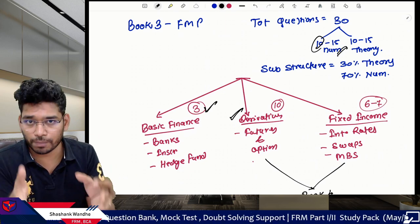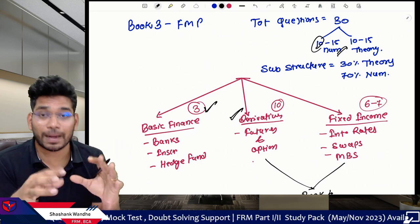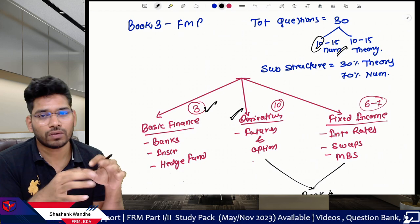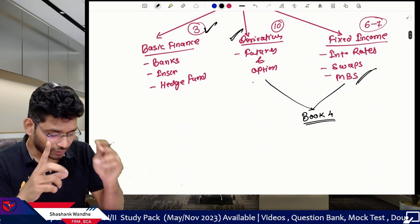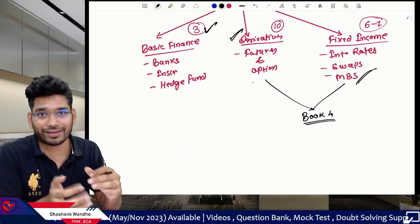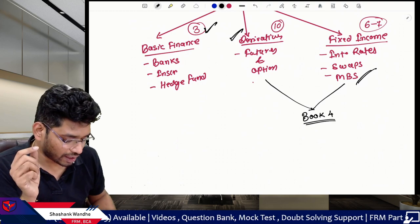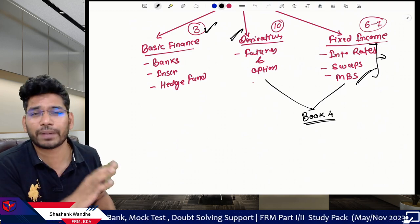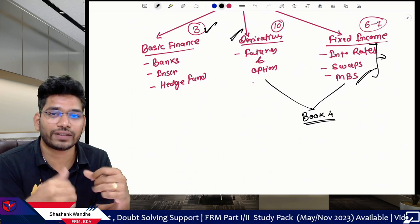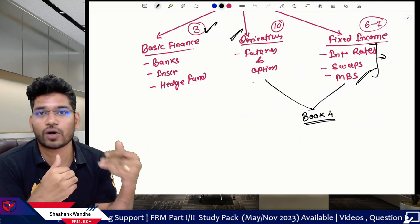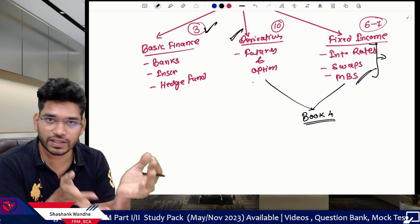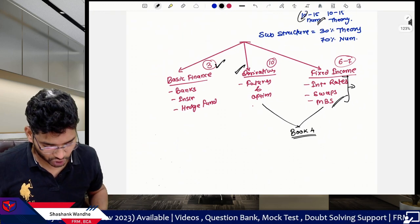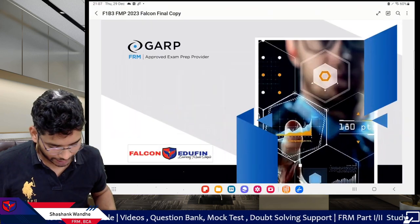Then move to the fixed income section. It's not compulsory to do derivatives first — you can start with fixed income in Book 3, then cover the six fixed income topics in Book 4, and then do derivatives. A fine-tuned self-study sequence will be released soon with month-by-month guidance on which topics to prepare, based on analysis of the complete FRM curriculum.